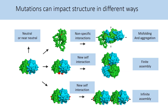Mutations can impact protein structure and assembly in a variety of ways. Let's consider this homo-dimer to illustrate possible consequences of mutations. First, they can be neutral and leave the structure largely intact. Alternatively, they can destabilize the structure, leading to misfolding, and misfolded proteins can then aggregate together. Another possible consequence of mutation is the creation of new self-interactions. In this case, the position of the mutations onto the structure is critical in determining the outcome.